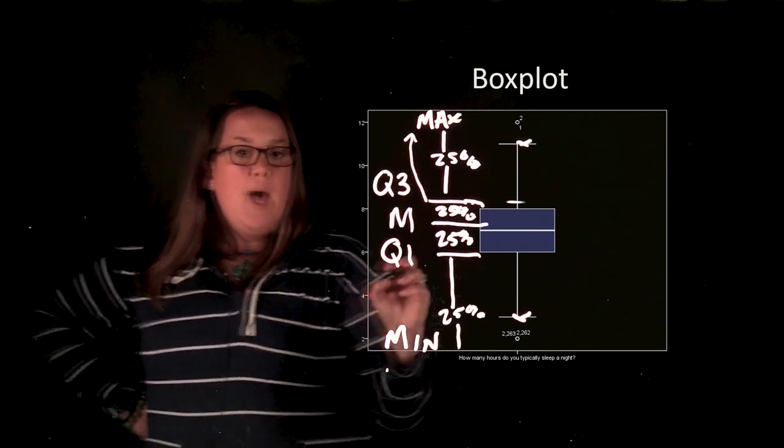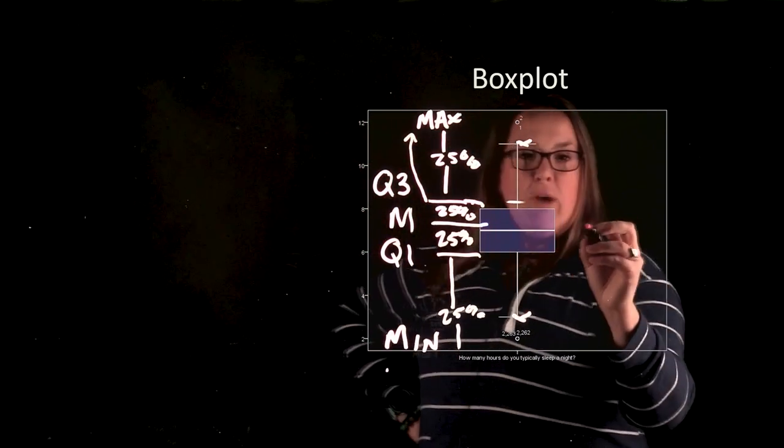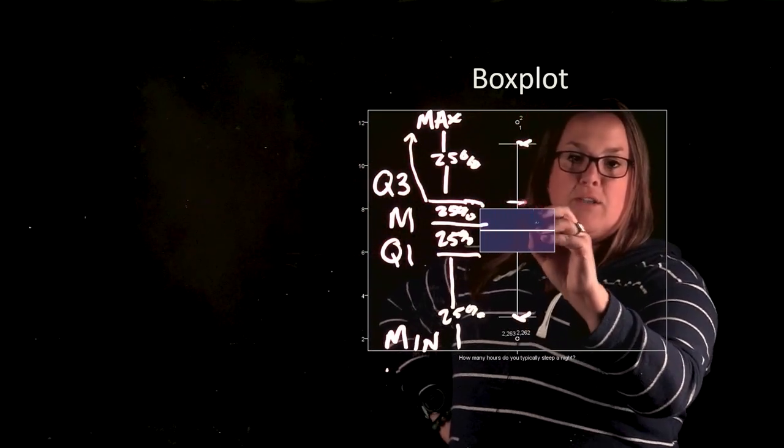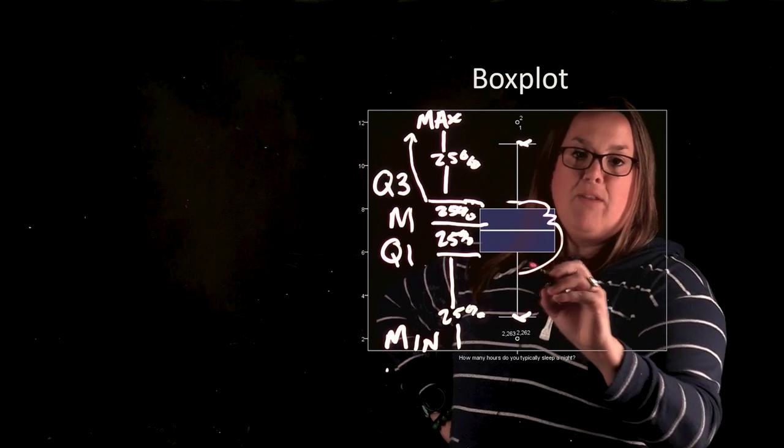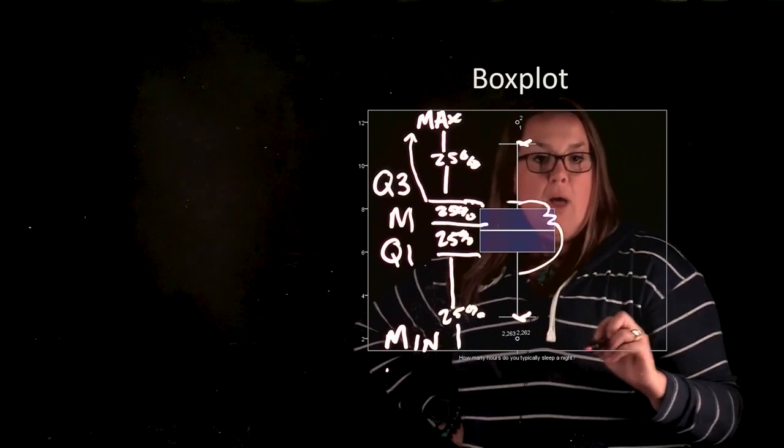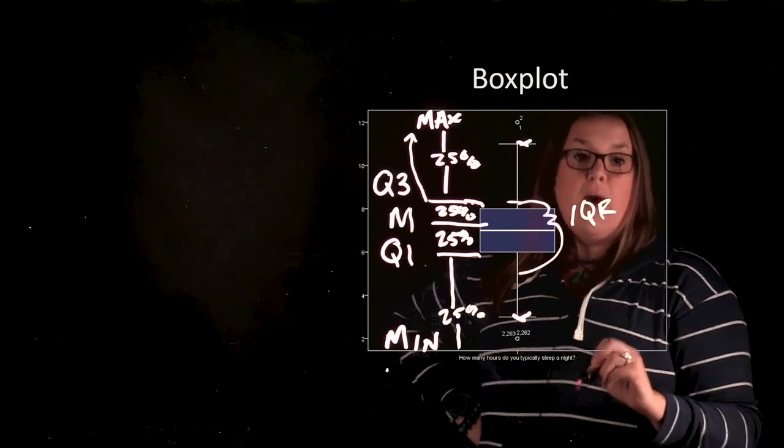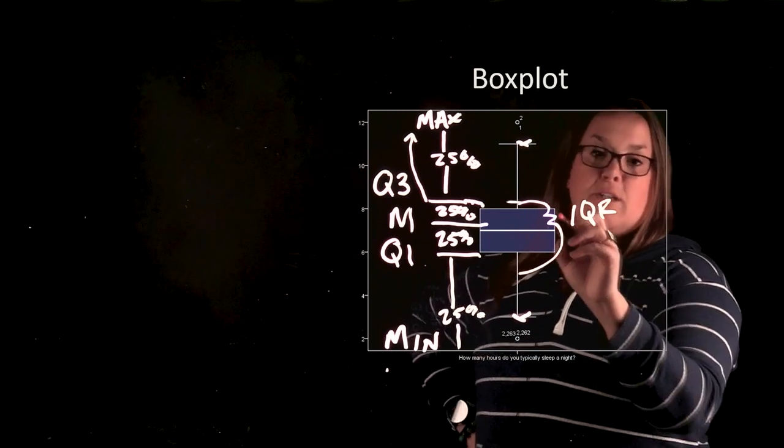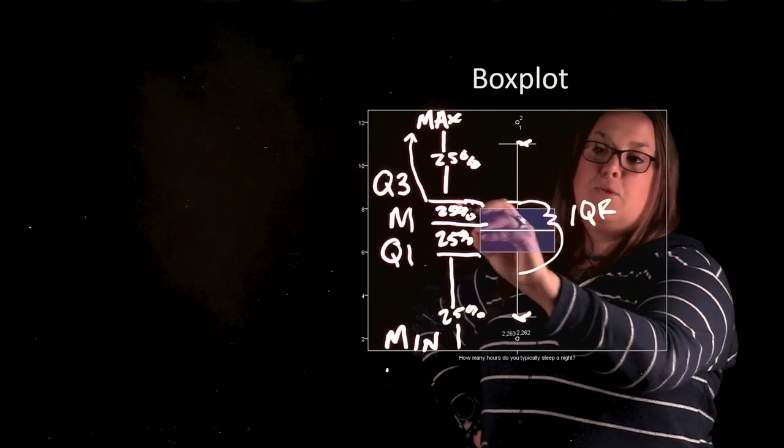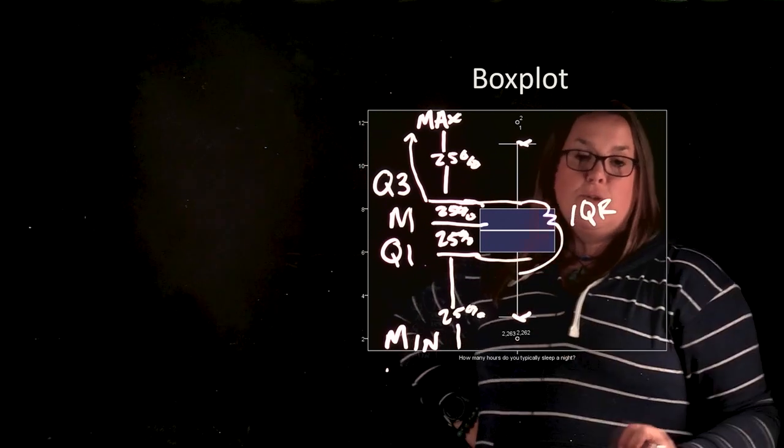And then the last thing, and we haven't quite got to this if you're watching these videos in my order, but the last thing is this actual box would be the interquartile range or the IQR. And that's going to be the distance between Q3 and Q1.